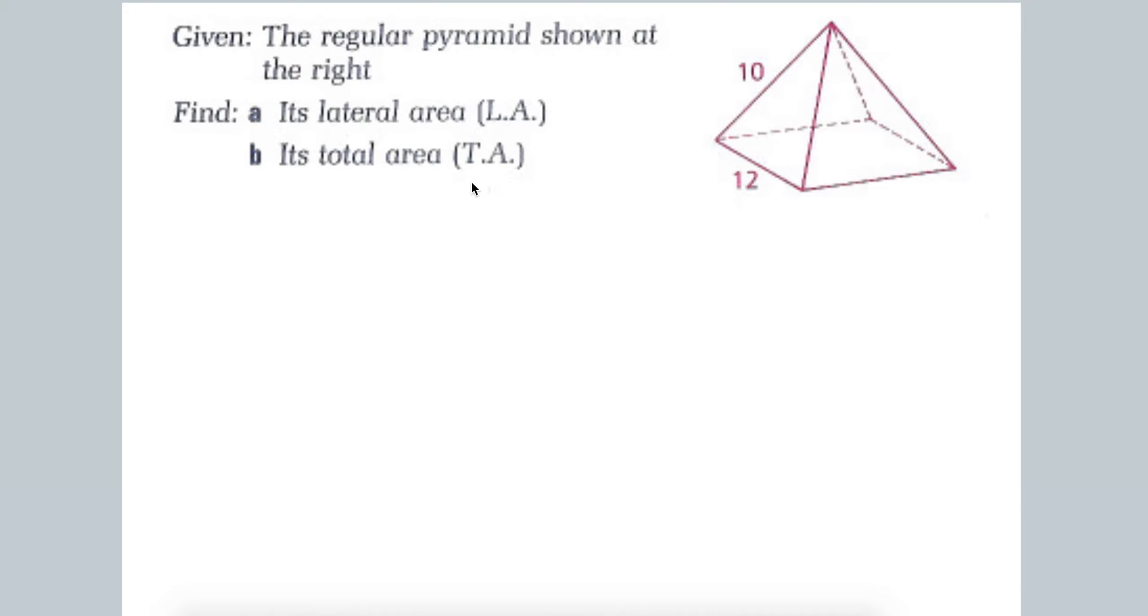So let's dive into an example. It says the regular pyramid is shown at the right. So if it's regular, that means the base. If it's four sides and it's regular, it means we know it's a square.